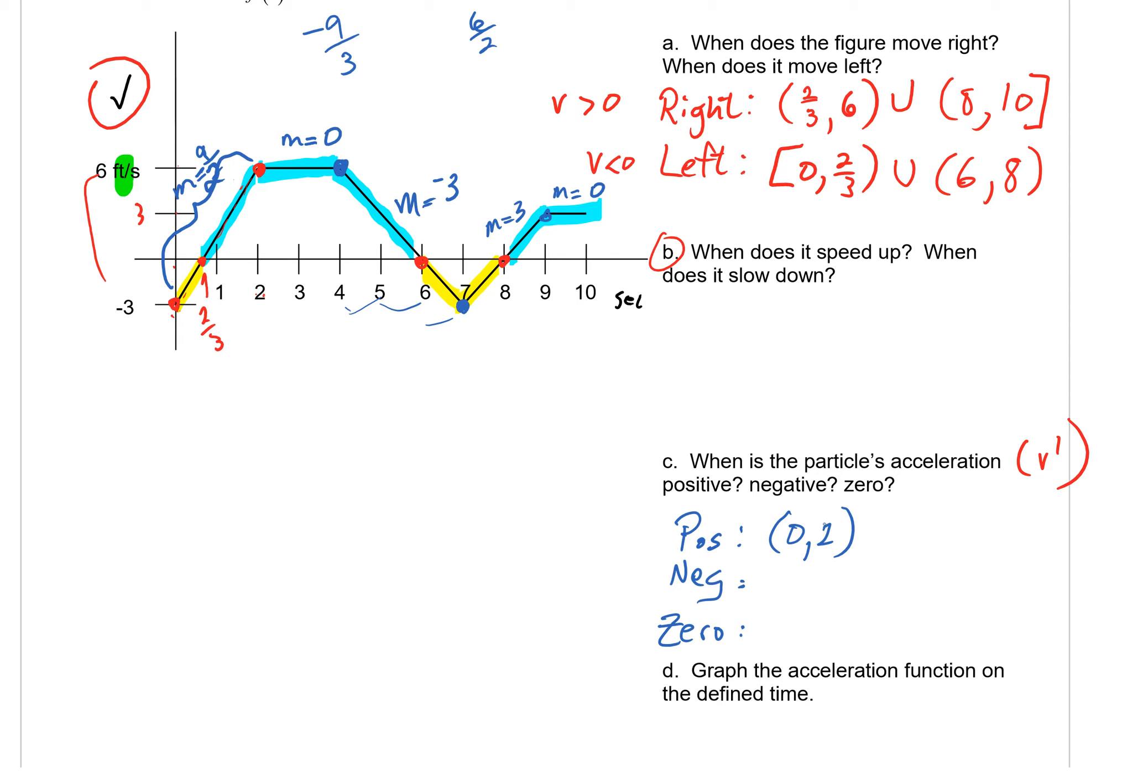Well that would be looking at m equals 3. That would be from 7 to 9, wouldn't it? How about where we have negative slope? Well I hope you can see that's between 4 and 7. And then where are we at 0? Well that would be between 2 and 4 and also between 9 and 10. So that's really where acceleration is going to be given to us.